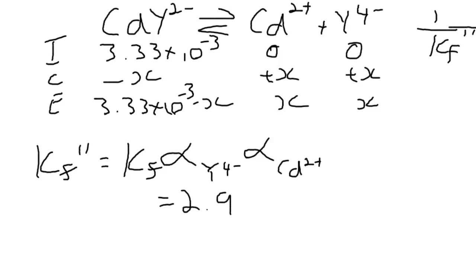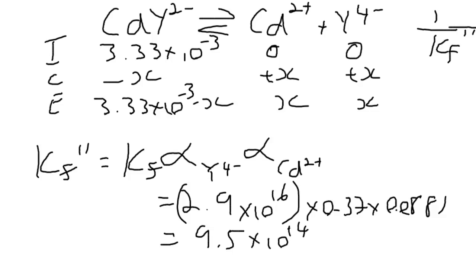So the Kf is 2.9 times 10 to the 16. We multiply that by 0.37 times 0.0881. That gives us a value of 9.5 times 10 to the 14. Once you have that value you can just treat it like any other equilibrium constant. So in this case we want to get 1 over that. So 1 over Kf double primed is going to equal 1.06 times 10 to the minus 15. So it's a pretty small number. So x is going to be small. We can make our usual approximation and we remove this any time you add or subtract x. It's going to be small compared to the initial value.